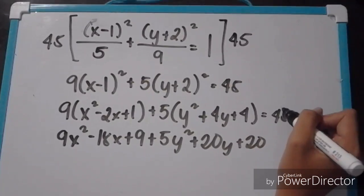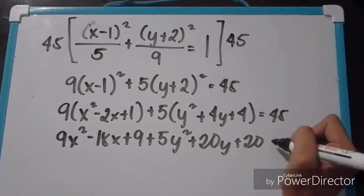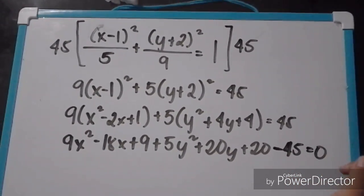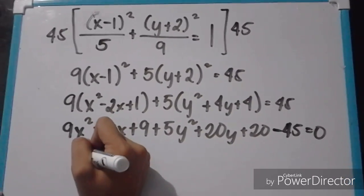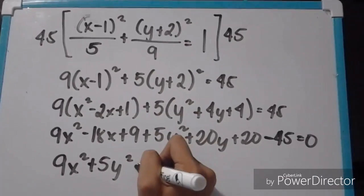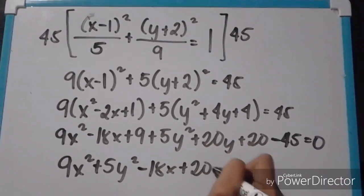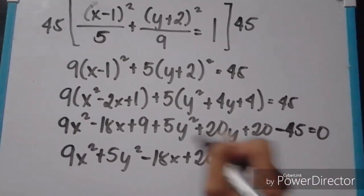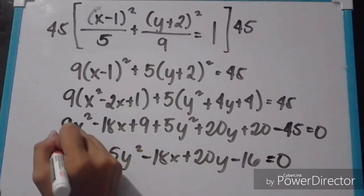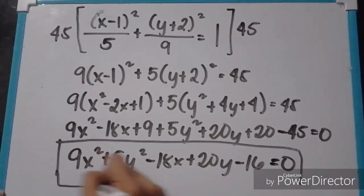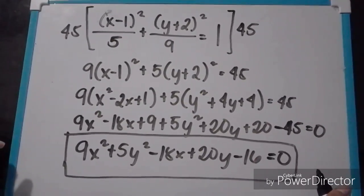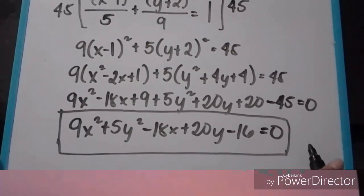Then we will move 45 to the left side of the equation to make it equal to 0, so it will be negative 45. Now simplify: 9x squared plus 5y squared minus 18x plus 20y, and 9 plus 20 minus 45 equals negative 16, is equal to 0. So that is the general form of the quantity of x minus 1 squared over 5, plus the quantity of y plus 2 squared over 9, equals 1.